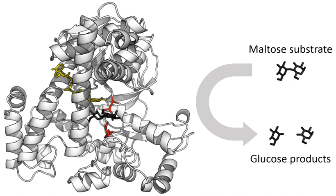An enzyme such as DNA polymerase catalyzes a reaction in a first step and then checks that the product is correct in a second step. This two-step process results in average error rates of less than 1 error in 100 million reactions in high-fidelity mammalian polymerases. Similar proofreading mechanisms are also found in RNA polymerase, aminoacyl-tRNA synthetases and ribosomes. Conversely, some enzymes display enzyme promiscuity, having broad specificity and acting on a range of different physiologically relevant substrates. Many enzymes possess small side activities which arose fortuitously, which may be the starting point for the evolutionary selection of a new function.